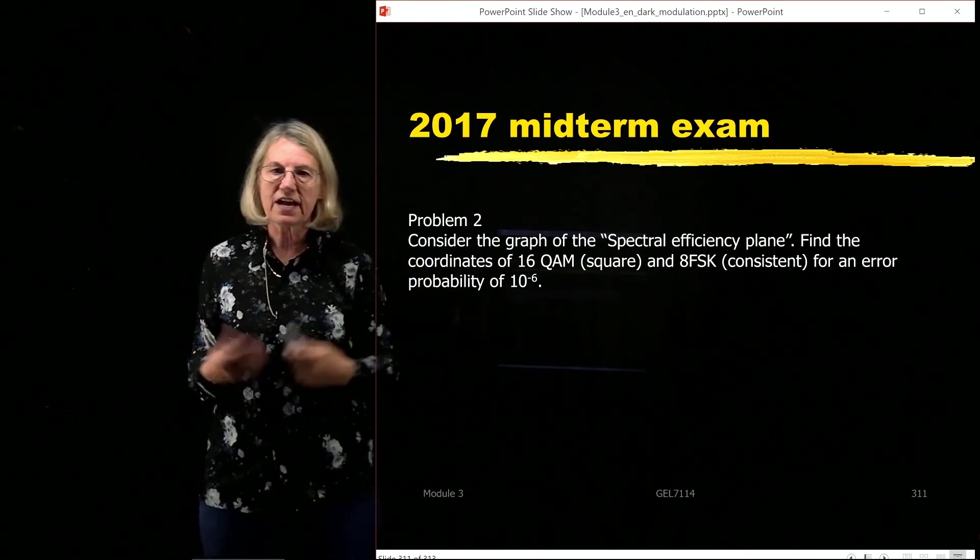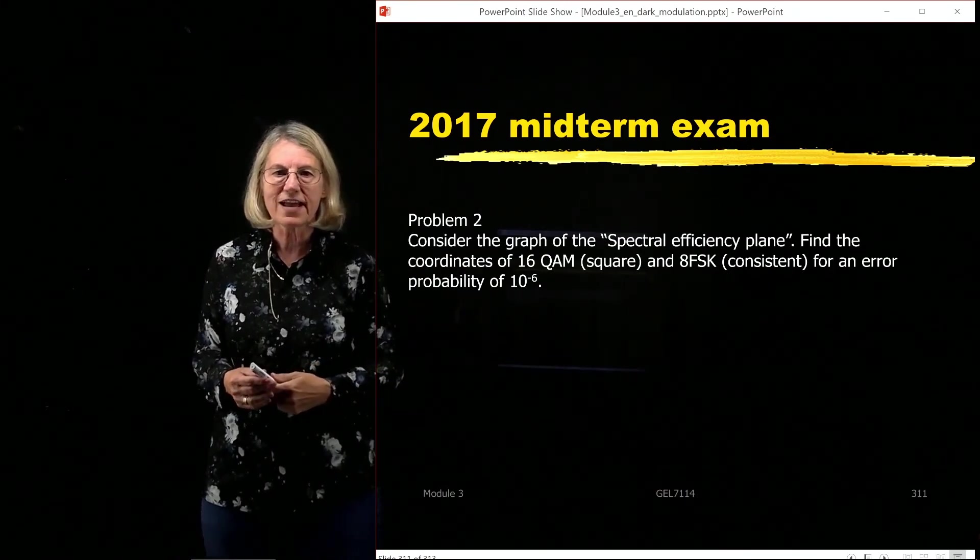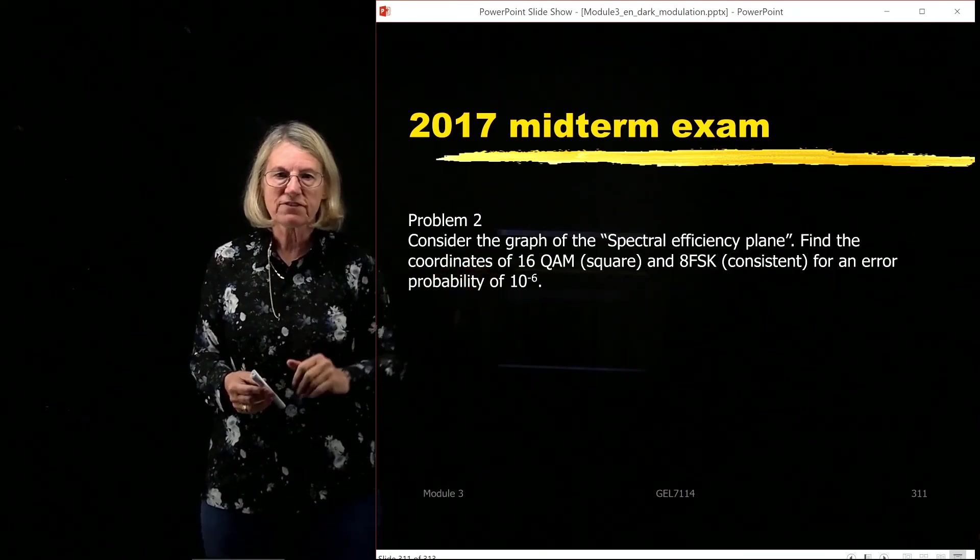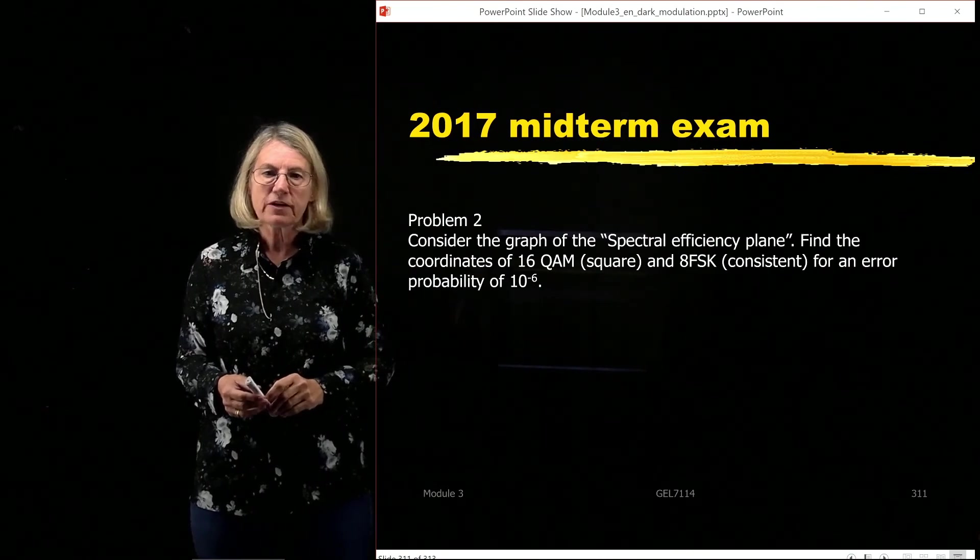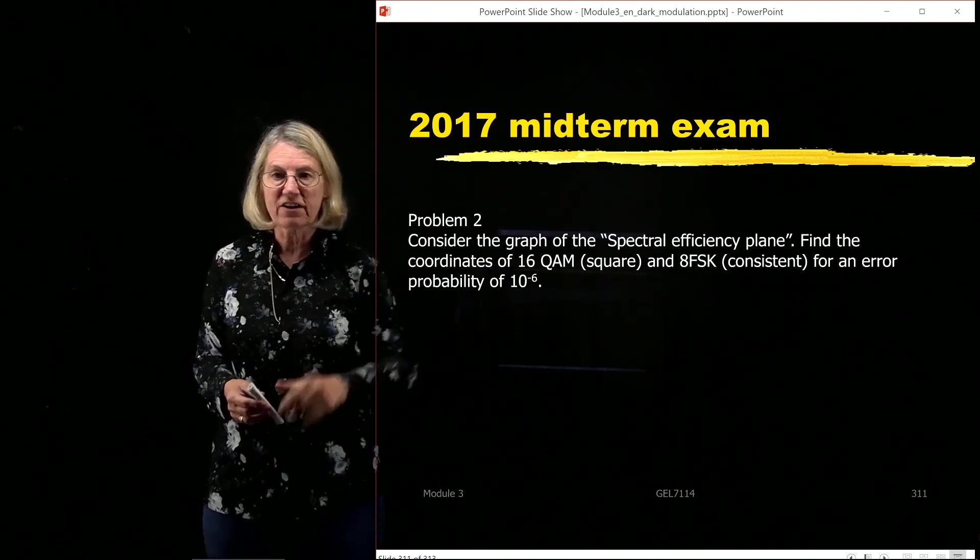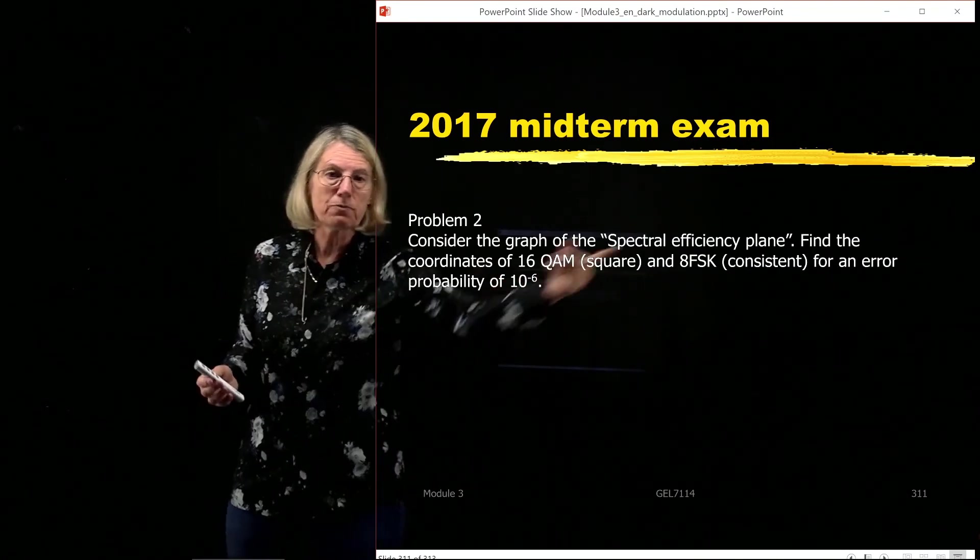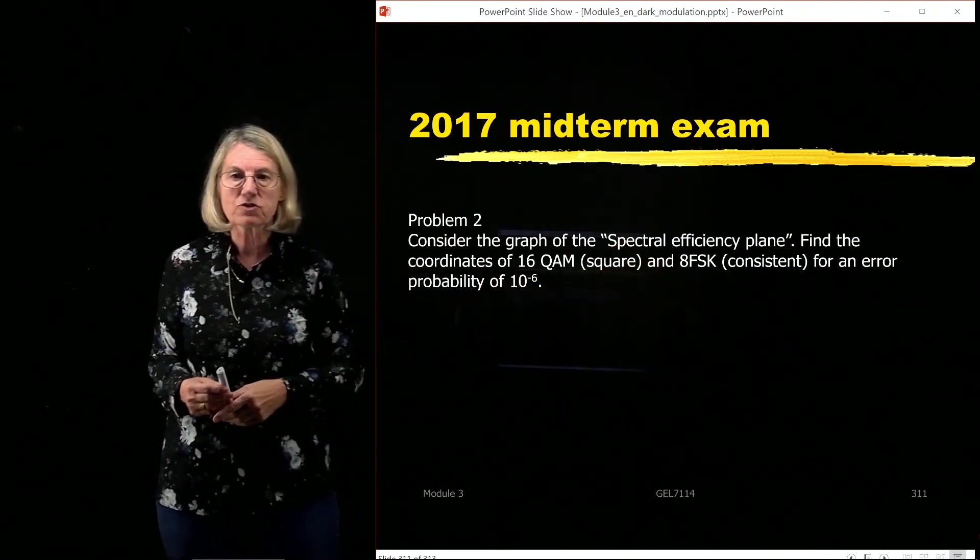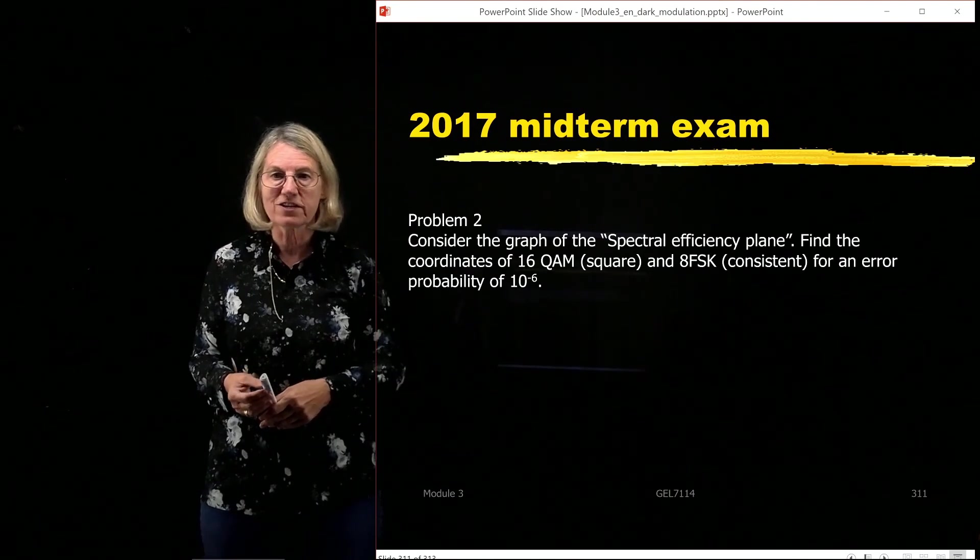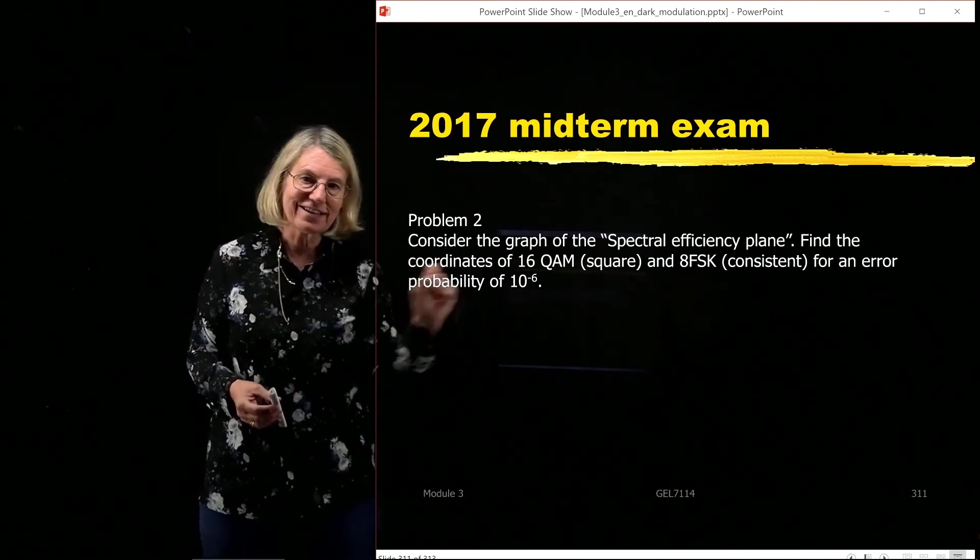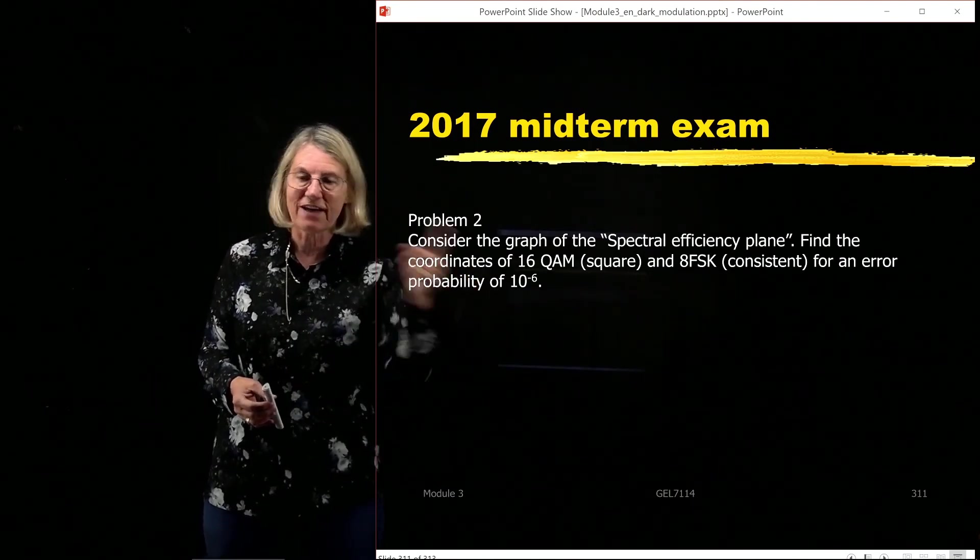Here are a couple of quick examples of kinds of questions that could be asked on an exam about the spectral efficiency plane. For instance, we could change the probability of error, say that it's 10 to the minus 6 instead of 10 to the minus 5, and ask for two modulation formats to find a new one. So of course the spectral efficiency would not change, but the coordinate in Eb over N0 would change because I have a different probability.